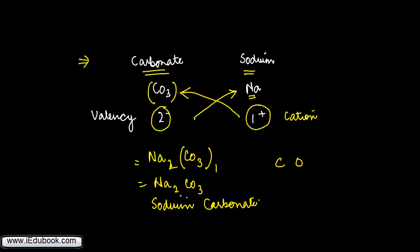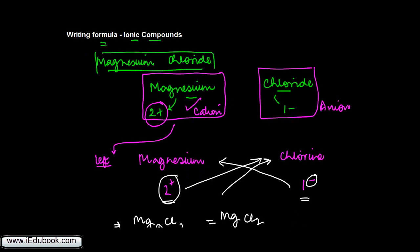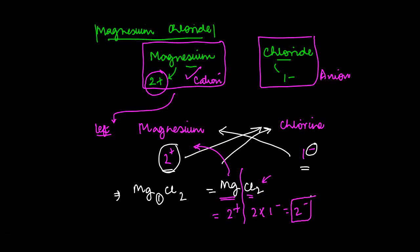This result holds in all cases. For sodium carbonate: sodium has a valency of one, and Na₂ means two ions of sodium, giving two positive charges. Carbonate has a valency of two minus, and there is one CO₃ group, giving two negative charges — two positive and two negative. For magnesium chloride: magnesium gives two positive charges, and two chlorine ions each with one minus give two negative charges. So the positive charge is always equal to the negative charge in ionic compounds.